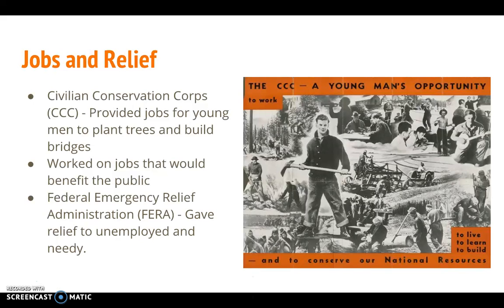President Roosevelt gave high priority to creating jobs, planning to help the unemployed through work relief programs — giving needy people government jobs. During his first month in office, he asked Congress to create the Civilian Conservation Corps (CCC), which provided jobs for young men planting trees, building bridges, and doing other work that would benefit the public. He also created the Federal Emergency Relief Administration (FERA) to give relief to the unemployed and needy. Over 10 years, the CCC provided about 2.5 million jobs.